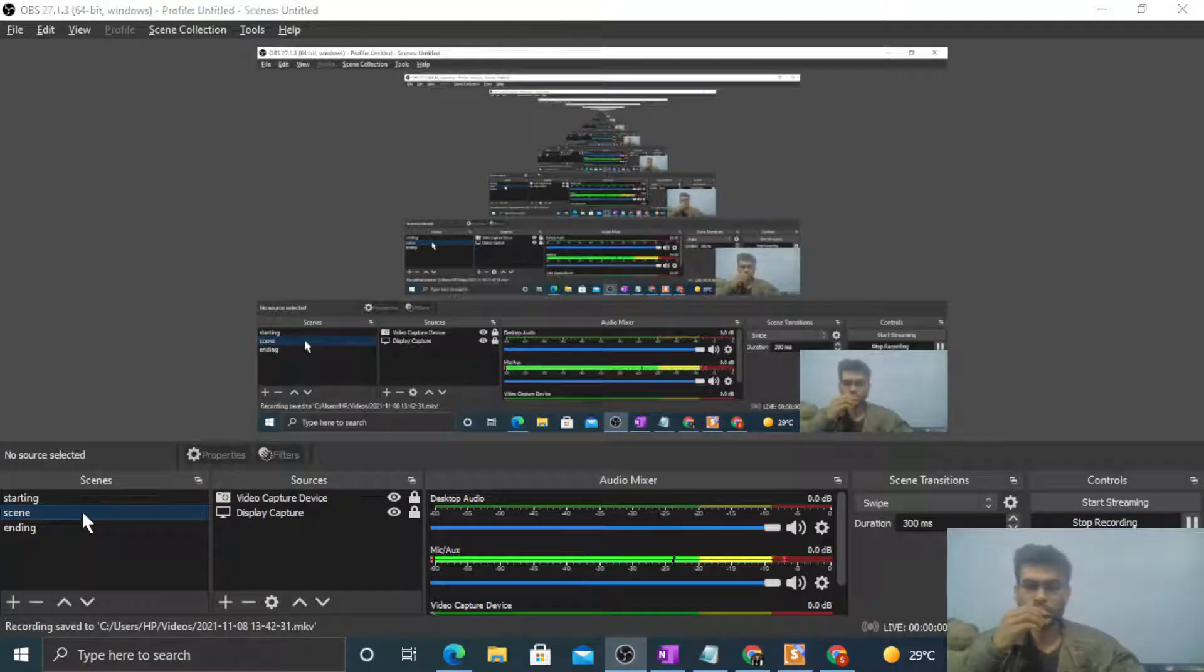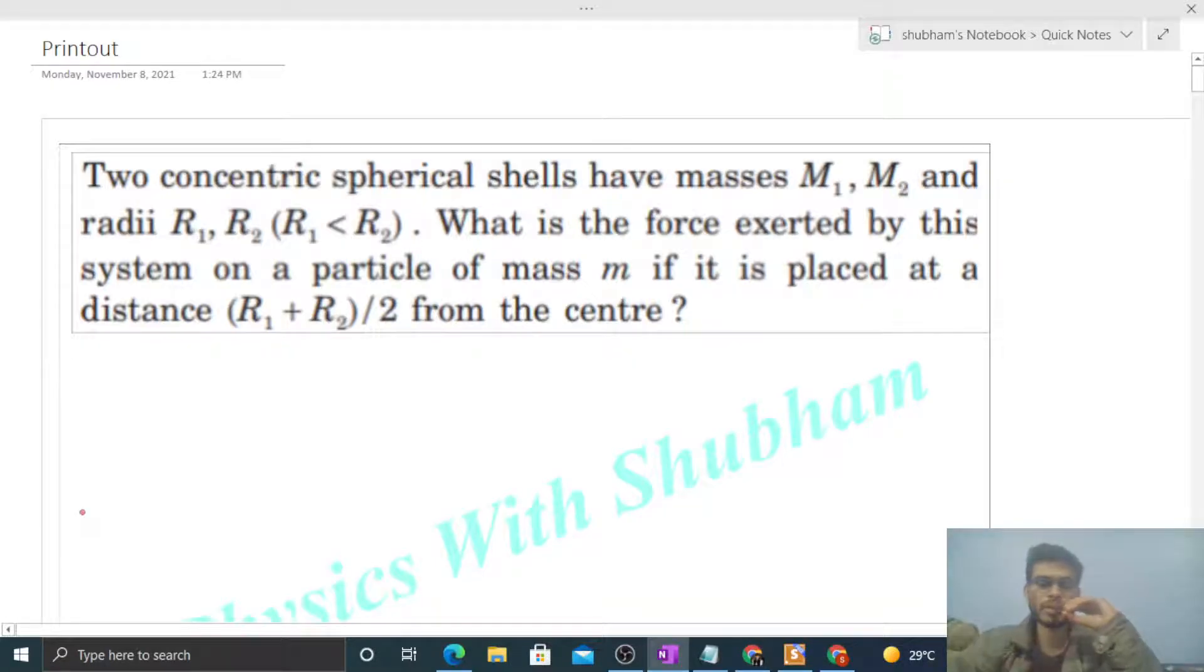Okay, hi everyone. Today let's discuss this interesting problem. It says two concentric spherical shells having masses M1, M2 and radii R1, R2 where R1 is less than R2. What is the force exerted by this system on a particle of mass small m if it is placed at a distance (R1 + R2)/2 from the center?